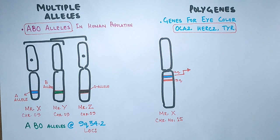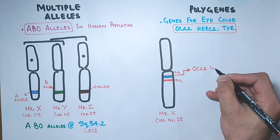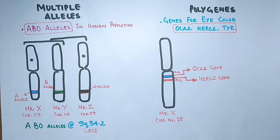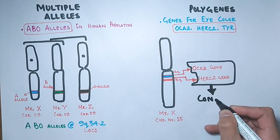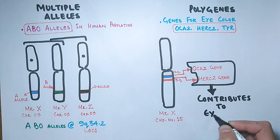And these two genes at different loci are OCA2 and HERC2. Both these genes will come under polygenic inheritance. That means both these genes will give additive effect and will contribute to a single phenotype, that is eye color.